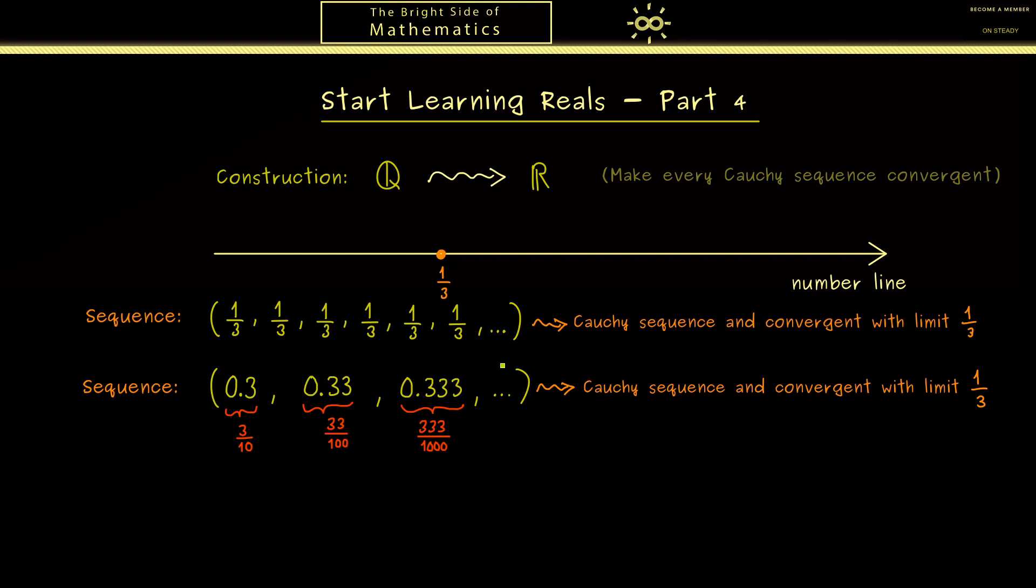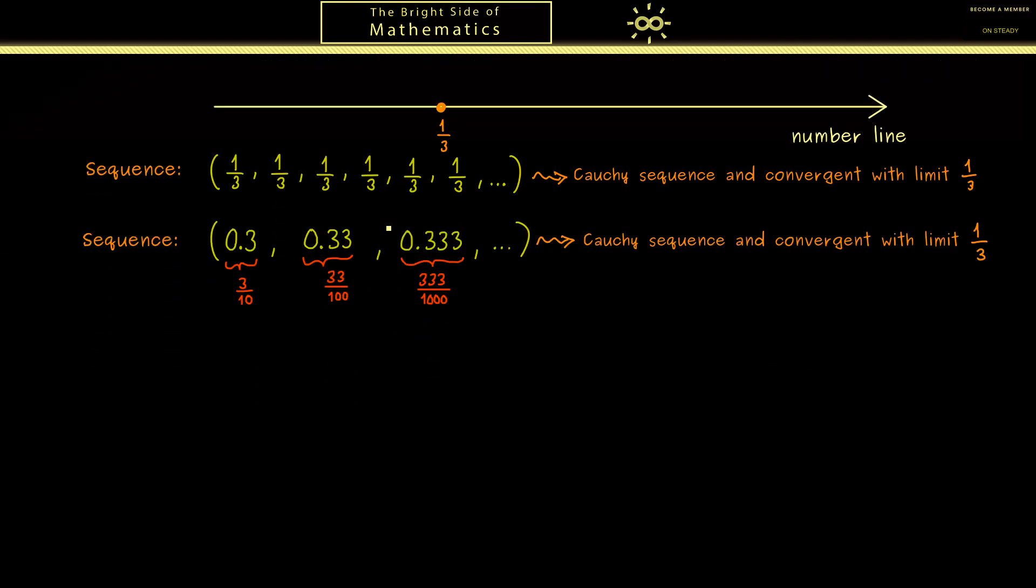So we can conclude when we form our equivalence classes soon, these two sequences here should land in one single box, simply because they have the same limit. However, you already know we cannot just look at the limits because there are Cauchy sequences in Q without limits. Indeed, for this we will find a simple solution.